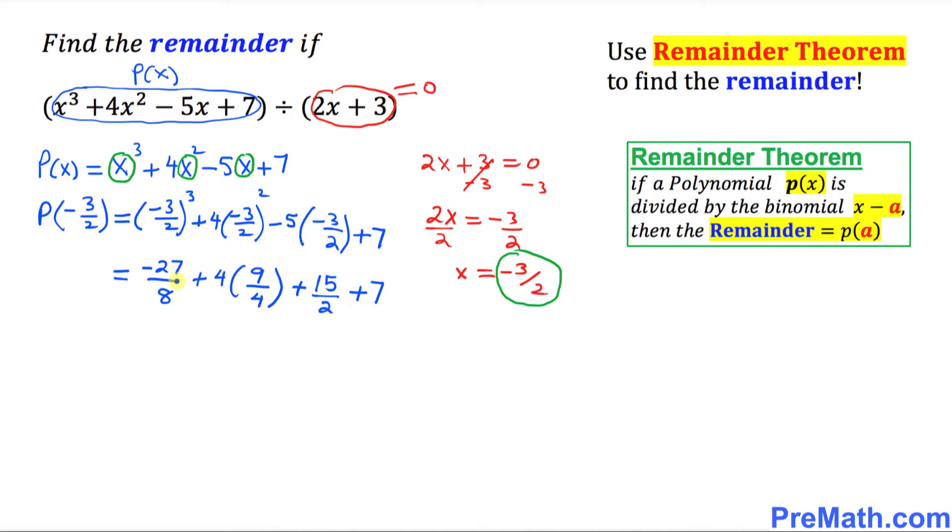We are not finished yet. Let's go furthermore. Negative 27 over 8. And here you can see this 4 and this 4, they are gone. So we simply ended up with plus 9 plus 15 over 2 plus 7.